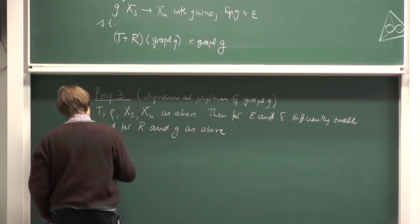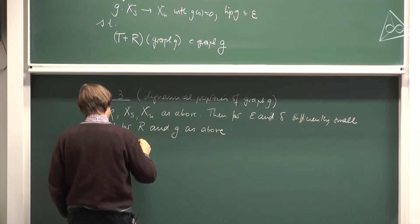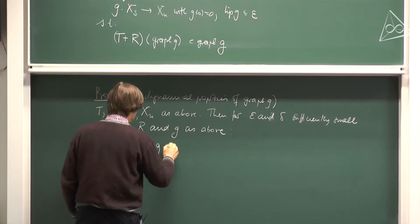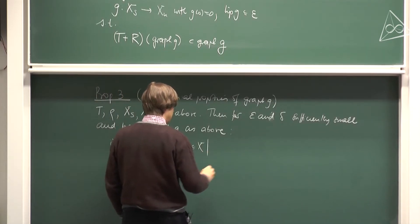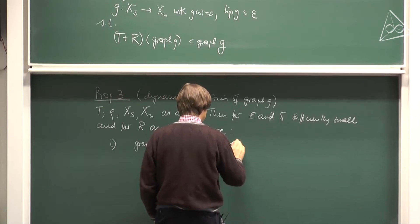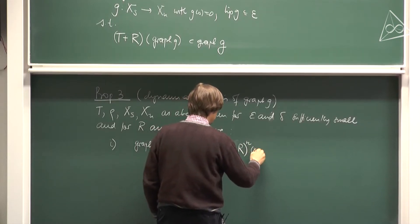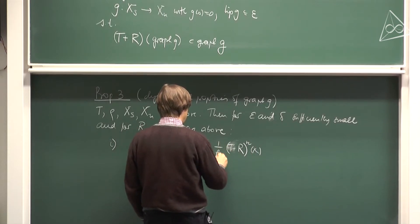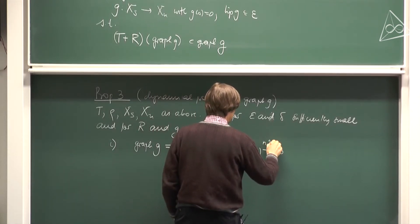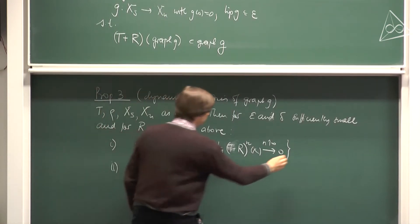We have three properties. First, the graph of g can be characterized as the set of all points for which the discrete-time nonlinear dynamical system converges to 0 at the rate rho^n.